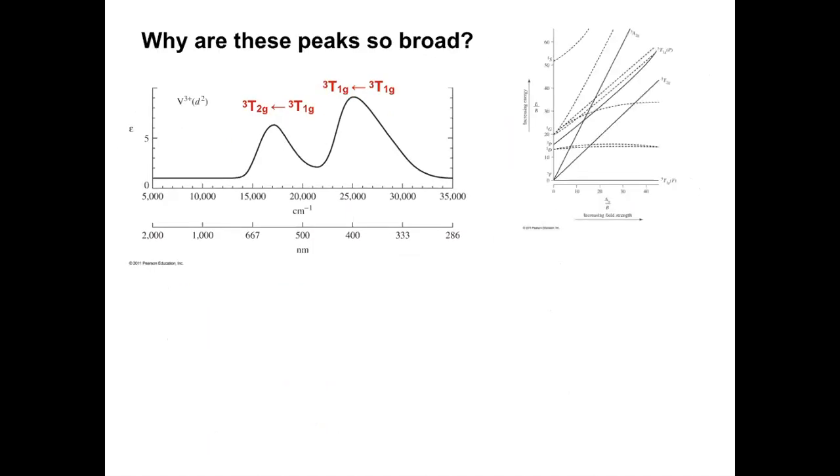The second question is, why are these peaks so broad? Hopefully you remember this: the broadness of these UV-Vis peaks has to do with molecular vibrations. The molecules are constantly moving, and that's changing the energy levels slightly. That change in energy level means instead of getting a discrete wavelength for a lambda max, we get a wide distribution of peaks at slightly different energies.